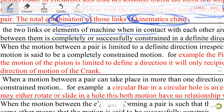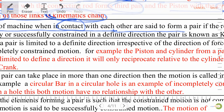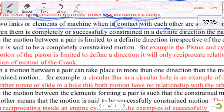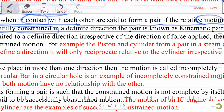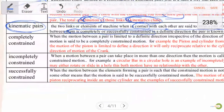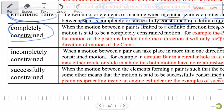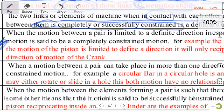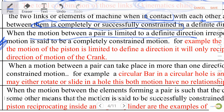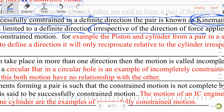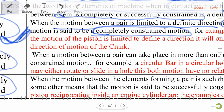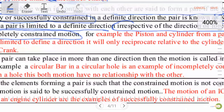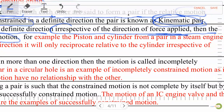A kinematic pair: the two links or elements of a machine when in contact with each other are said to form a pair. If the relative motion between them is completely or successfully constrained, this arrangement is known as a kinematic pair. Completely constrained motion: when motion between a pair is limited to a definite direction irrespective of the direction of force applied, this is completely constrained motion.